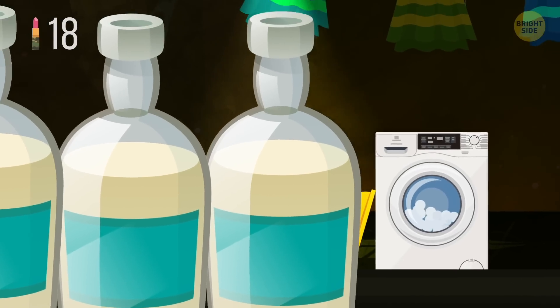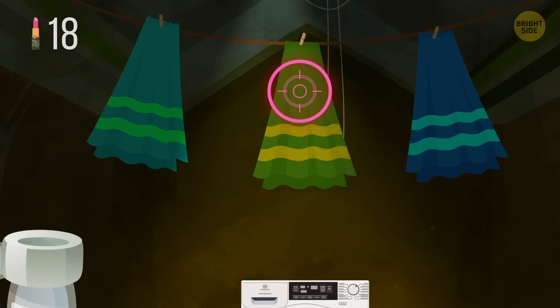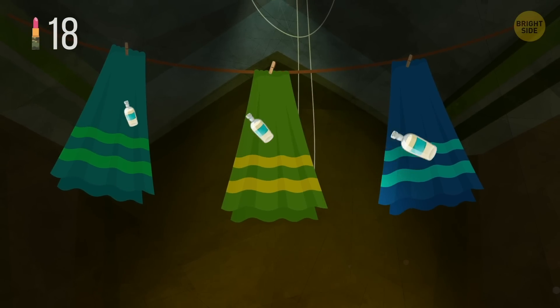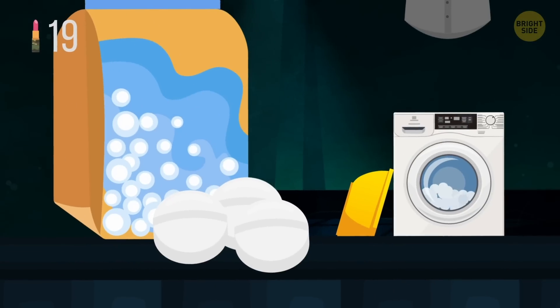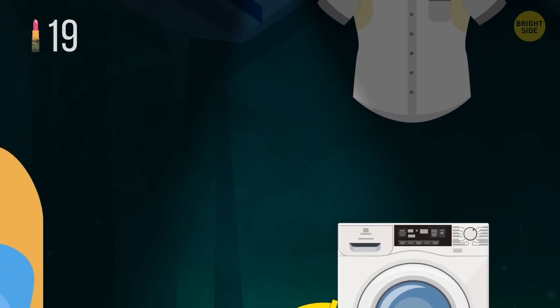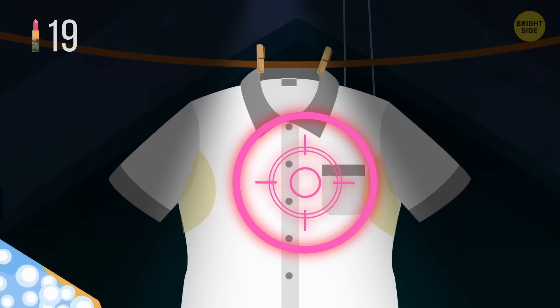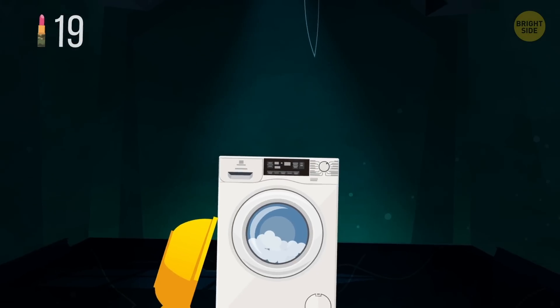While washing your towels, pour some vinegar in the fabric softener cup. It'll effectively replace dryer sheets. A handful of aspirin thrown in with a load of whites will brighten the clothing and remove yellow stains and that headache it gave you.